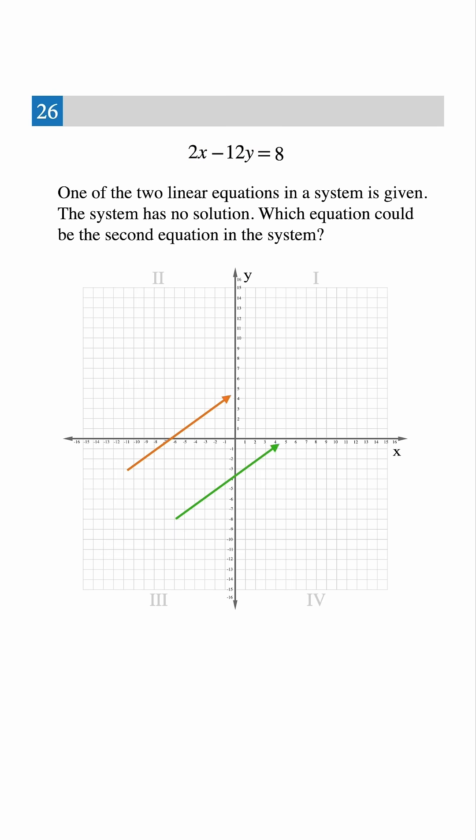Remember, if two lines have no solution, that means they never cross and always stay parallel, which implies they will have the same slope but different intercepts.